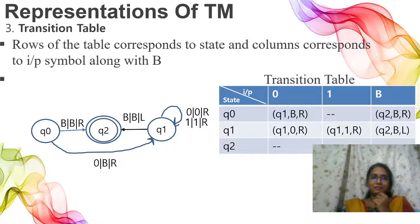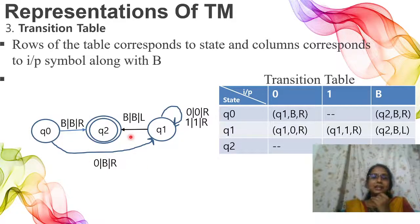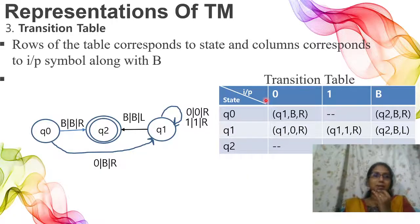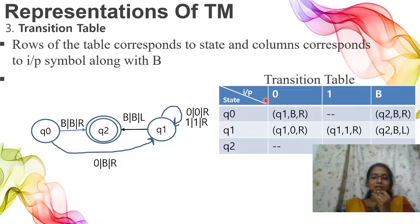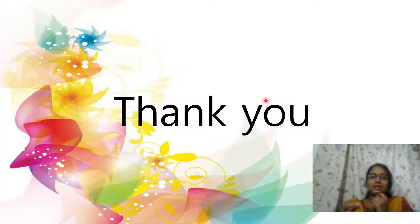So we have discussed three representations of the Turing Machine. First, instantaneous representation using the move relation — that is delta. Second, transition diagram. Third, transition table. I hope the concept is clear. If you have any doubts, please ask. We will see Turing Machine examples in the next video. Okay, bye.